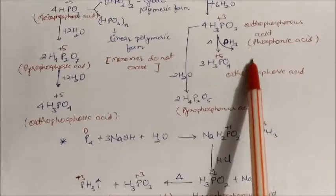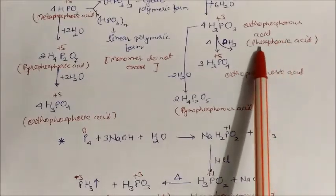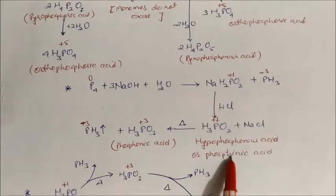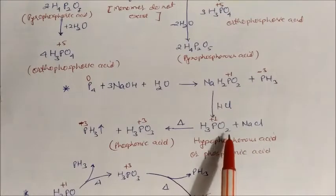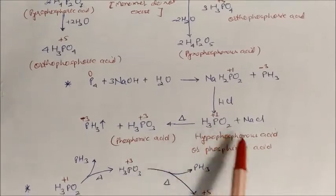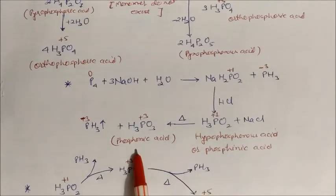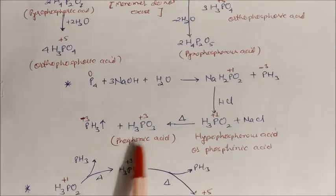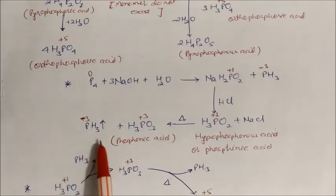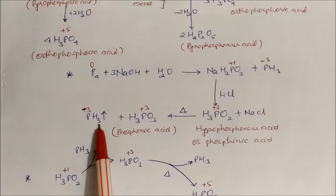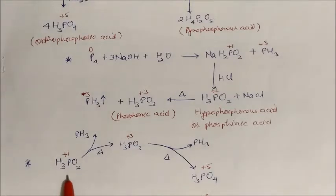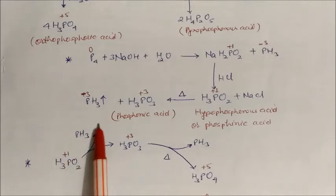H₃PO₂ is very different from orthophosphorus acid which is also called phosphonic acid. Phosphinic acid means one oxygen less — phosphinic acid is H₃PO₂ and phosphonic acid is H₃PO₃. That is the basic difference between the two. If you heat H₃PO₂, it converts back into phosphonic acid with phosphine gas released, showing a cycle.